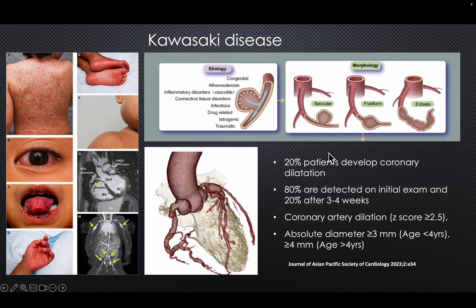About 20 percent of patients with Kawasaki disease, which typically occurs in children under five years of age, can develop coronary artery dilatation. This has a very important prognostic bearing because of the risk of coronary artery thrombosis causing myocardial infarction and ischemia at a very young age, giving it a catastrophic outlook. So it is very important that if we suspect Kawasaki disease, we look at the coronaries.